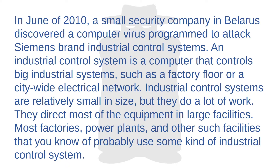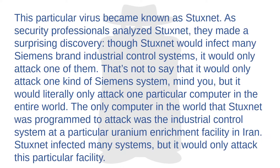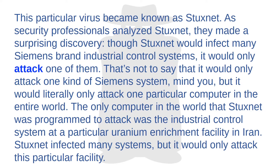In June of 2010, a small security company in Belarus discovered a computer virus programmed to attack Siemens-brand industrial control systems. An industrial control system is a computer that controls big industrial systems, such as a factory floor or a citywide electrical network. They are relatively small in size but direct most of the equipment in large facilities — most factories, power plants, and other facilities probably use some kind of industrial control system. This particular virus became known as Stuxnet. As security professionals analyzed Stuxnet, they made a surprising discovery: though Stuxnet would infect many Siemens-brand industrial control systems, it would only attack one of them.